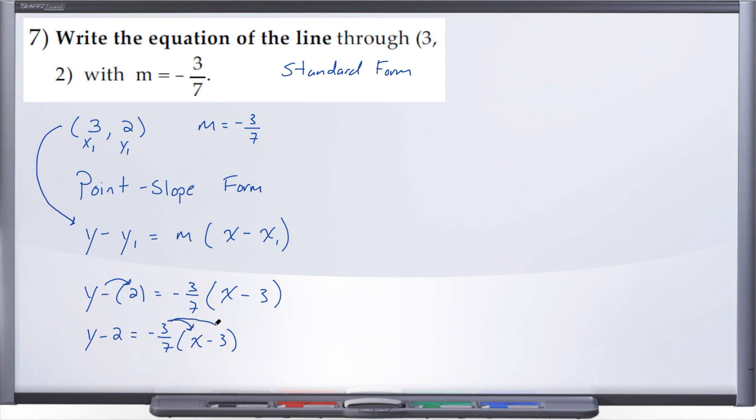We could if we wanted to distribute this negative three over seven through the set of parentheses, but I don't like working with fractions so let's go ahead and get rid of them. The way that we are going to get rid of our fraction here is multiply the entire equation by the common denominator, and in this case the common denominator is seven. So you're going to multiply the whole equation by seven, which is saying the same thing as multiplying this side of the equation by seven and then each of the two terms here on the left by seven.